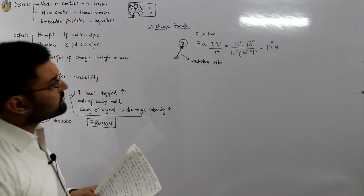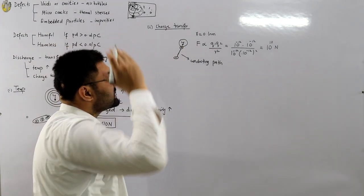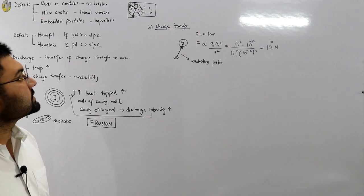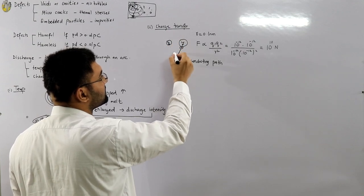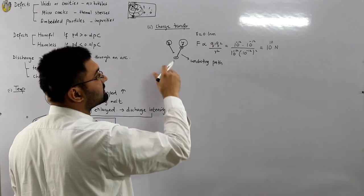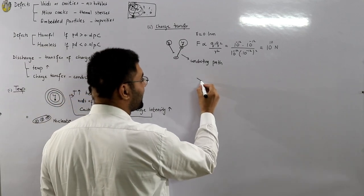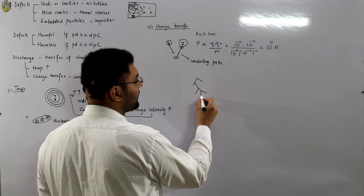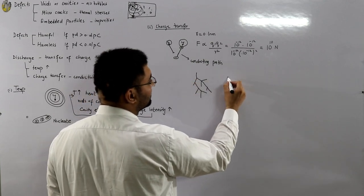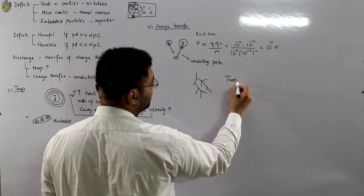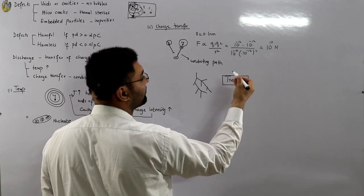This conductive path formed by the attraction of opposite charges is called tracking. Multiple discharge events across different voids form multiple tracks. From observations, these tracks appear as fine channels in the form of a tree-like structure. This process is therefore called treeing.